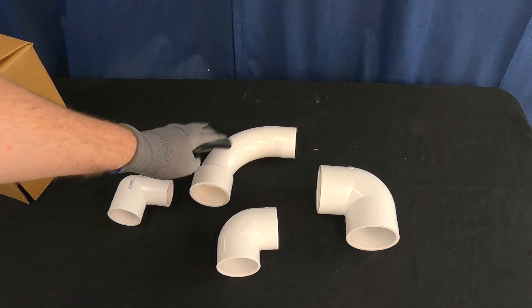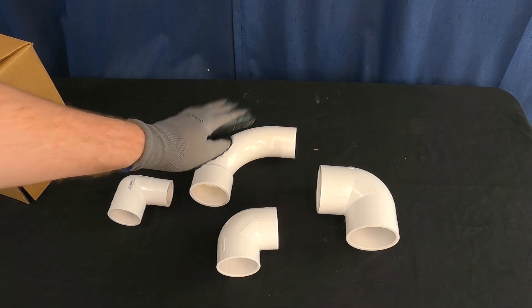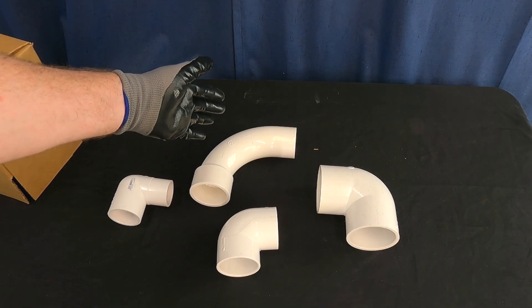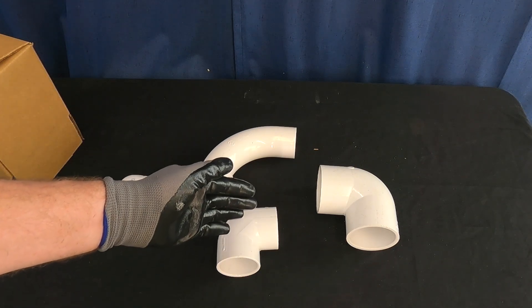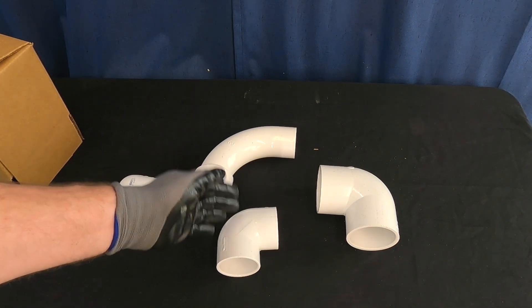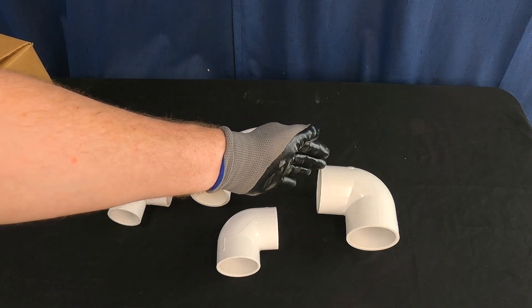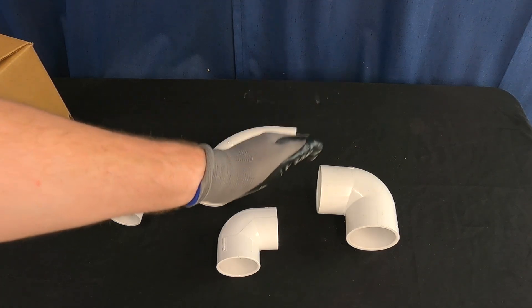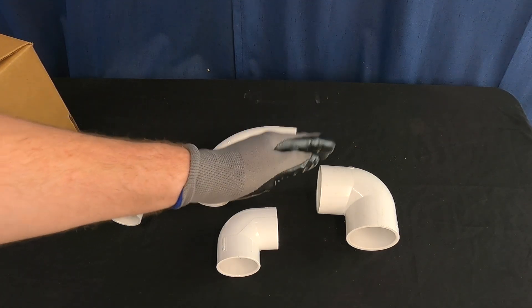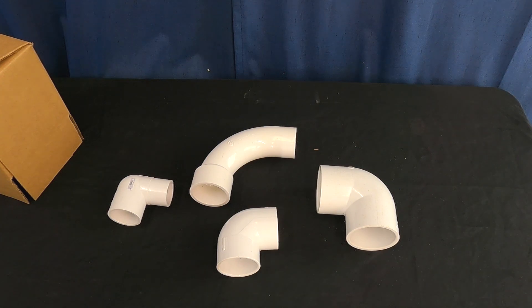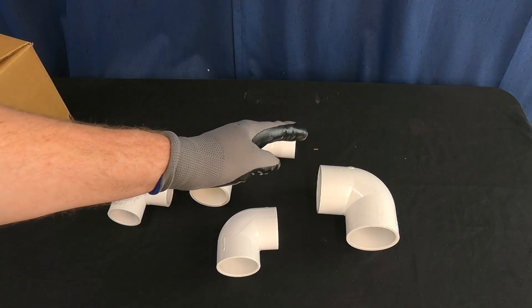Almost all of the incremental improvements that you could get to flow by using something like a sweep elbow versus a short radius 90 would probably be better allocated towards looking at increasing the pipe size of your filtration system. What it comes down to is laminar flow.